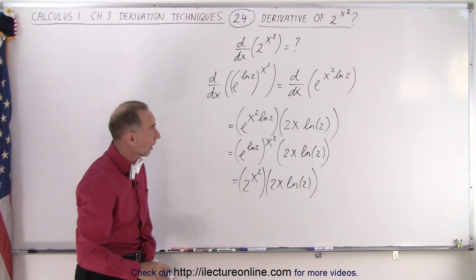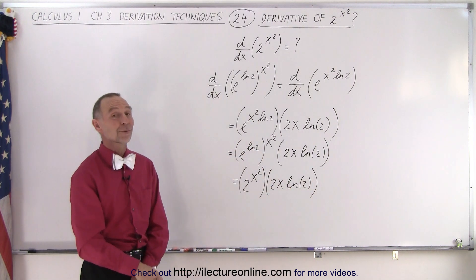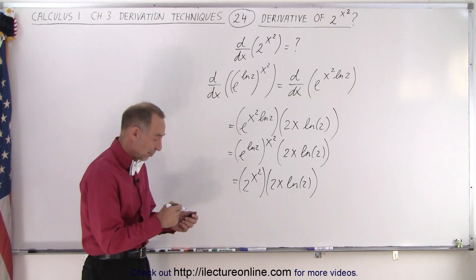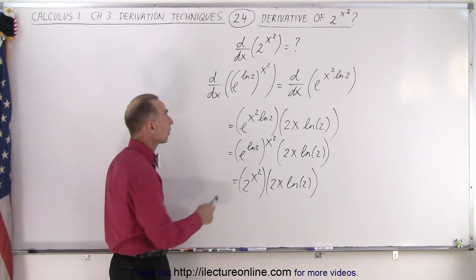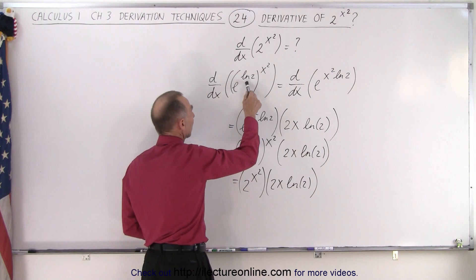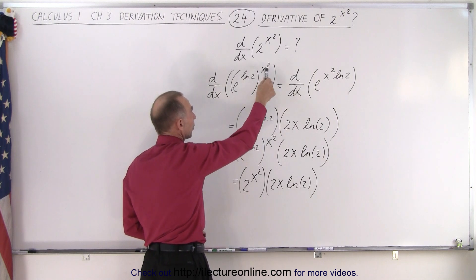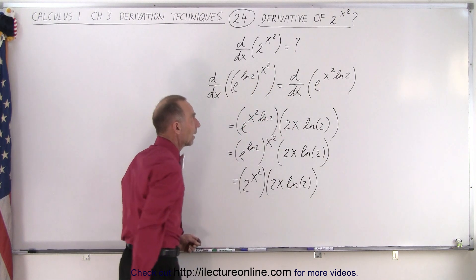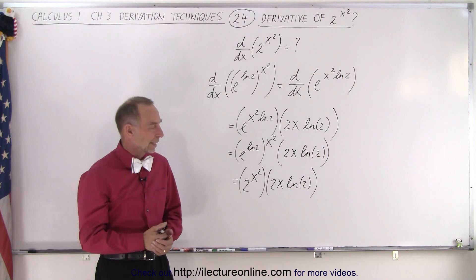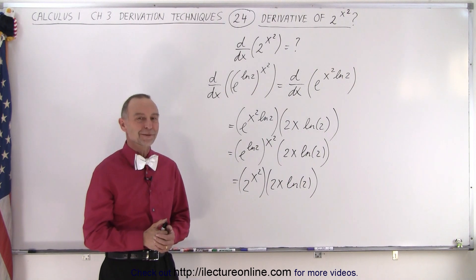That's the derivative of 2 to the x squared. We use that same trick: instead of writing 2, we write e to the natural log of 2, then multiply the exponents, and from there it becomes a simple problem.